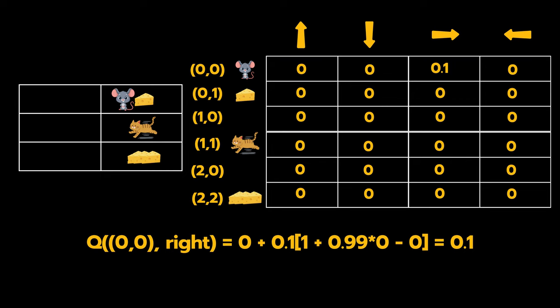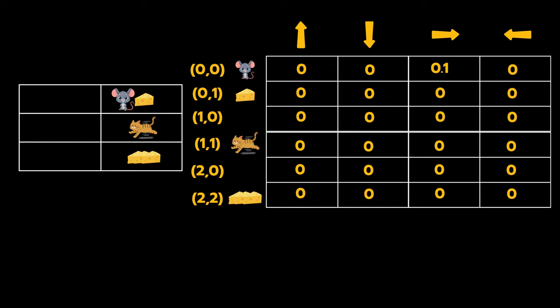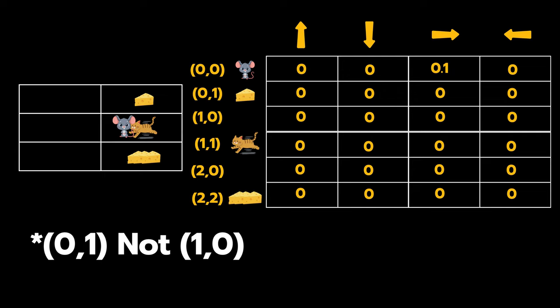So let's begin. Since the episode hasn't ended, we continue, and then from here Jerry again takes a random action and he moves down. But oh no, he runs into Tom. So Tom has caught Jerry. So we have to update our estimation of the Q value for state (1,0) and the action down.